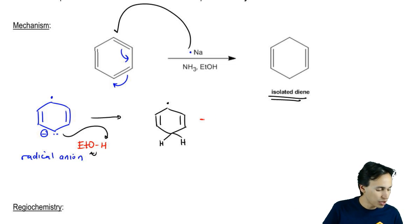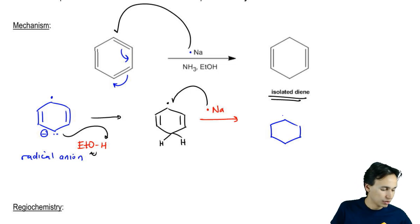At this point, I react with another equivalent of my elemental sodium. That elemental sodium is going to donate an electron to that same location and now I'm going to get a lone pair anion. This is just a carbanion intermediate.